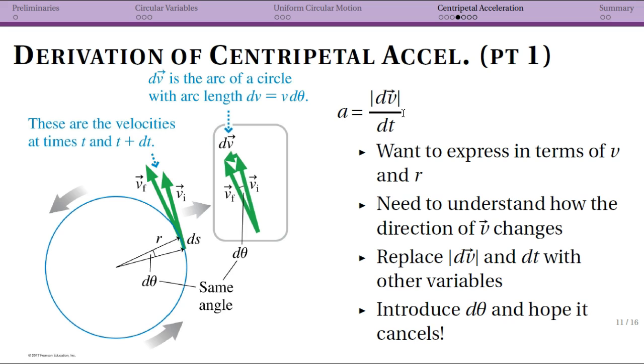So this is a nice starting point but what we want to do is actually express this in terms of v where you can think of this as the tangential speed and r where that's the radius of the circle that the object is traveling in. So we need to understand how the direction of our velocity vector is changing. We'll need to look at some geometry to do that and we need to replace both parts of this initial equation this derivative with other variables.